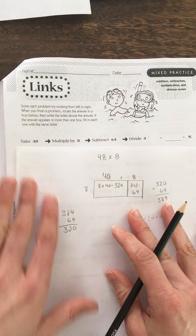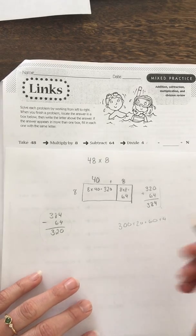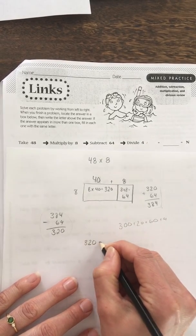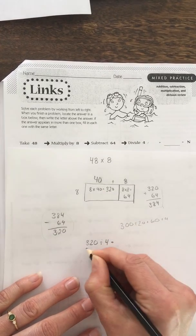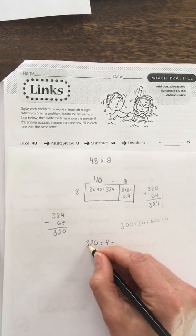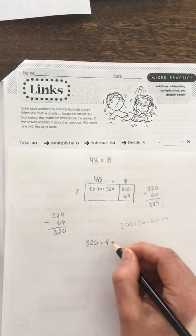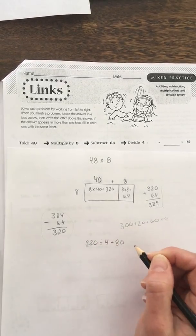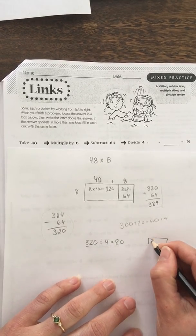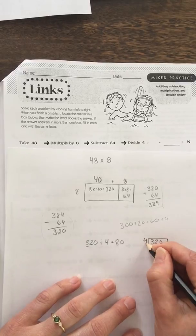So now we have 320 and I'm going to divide by 4. Some of you might see right away, there's a math fact here, 32 divided by 4 is 8, so 320 divided by 4 is 80. But if you didn't see that right away, then you could always use the big 7.